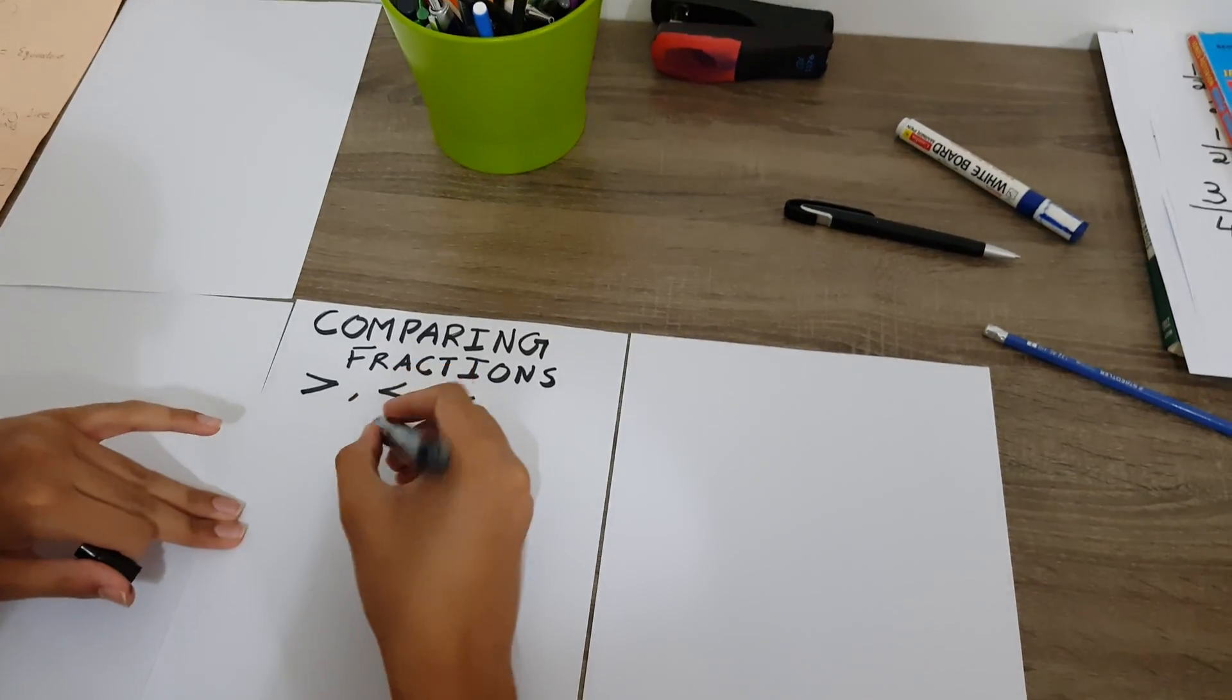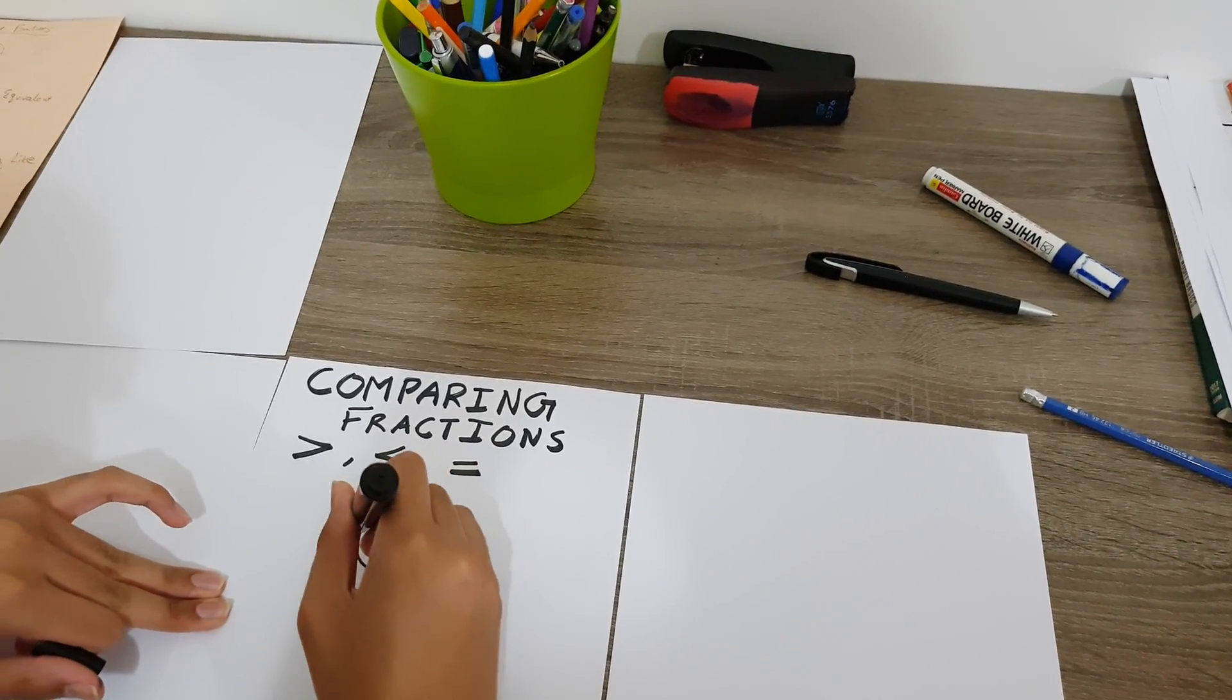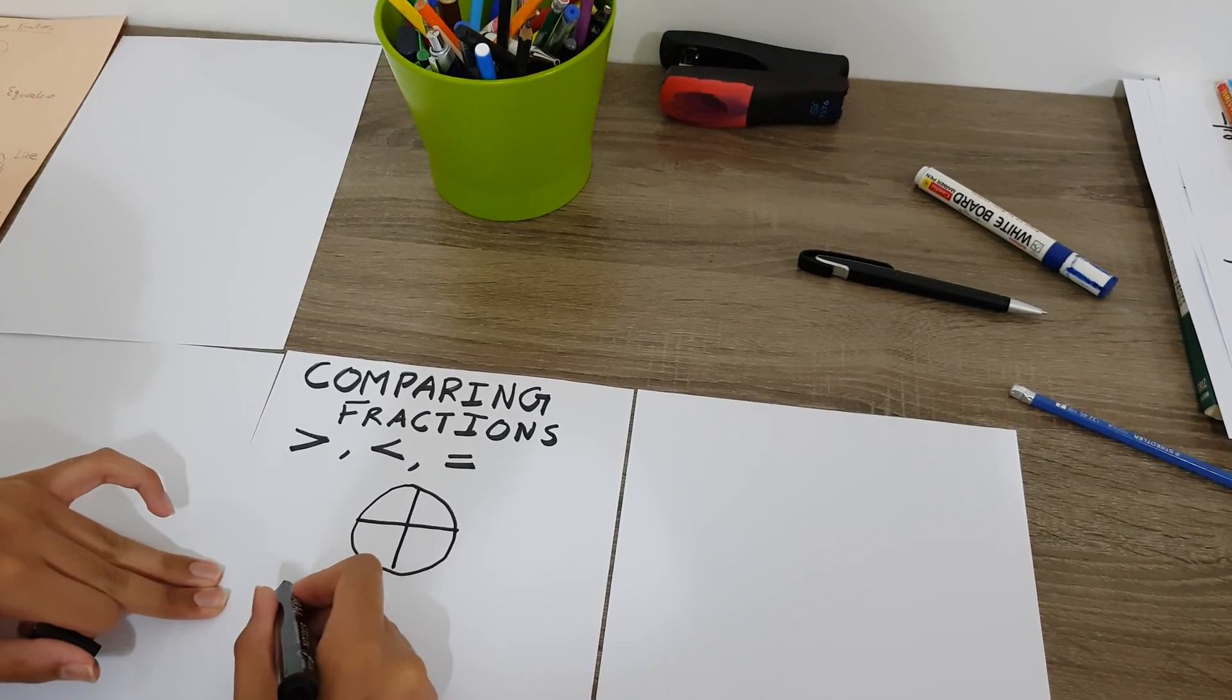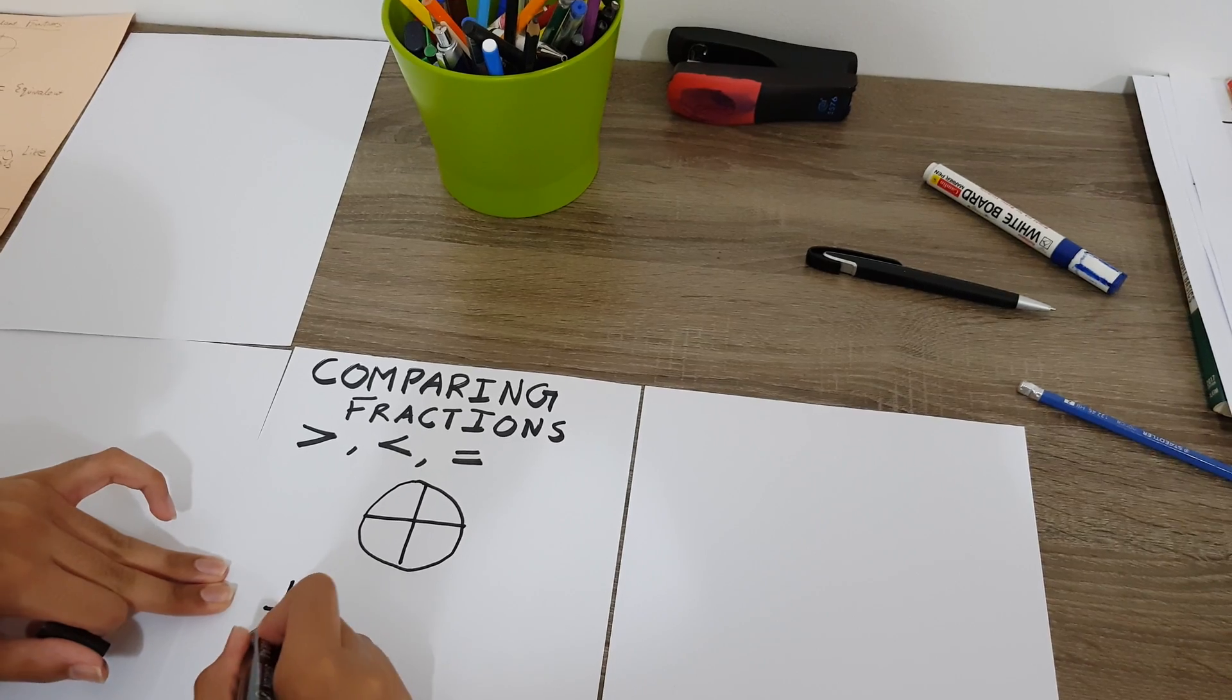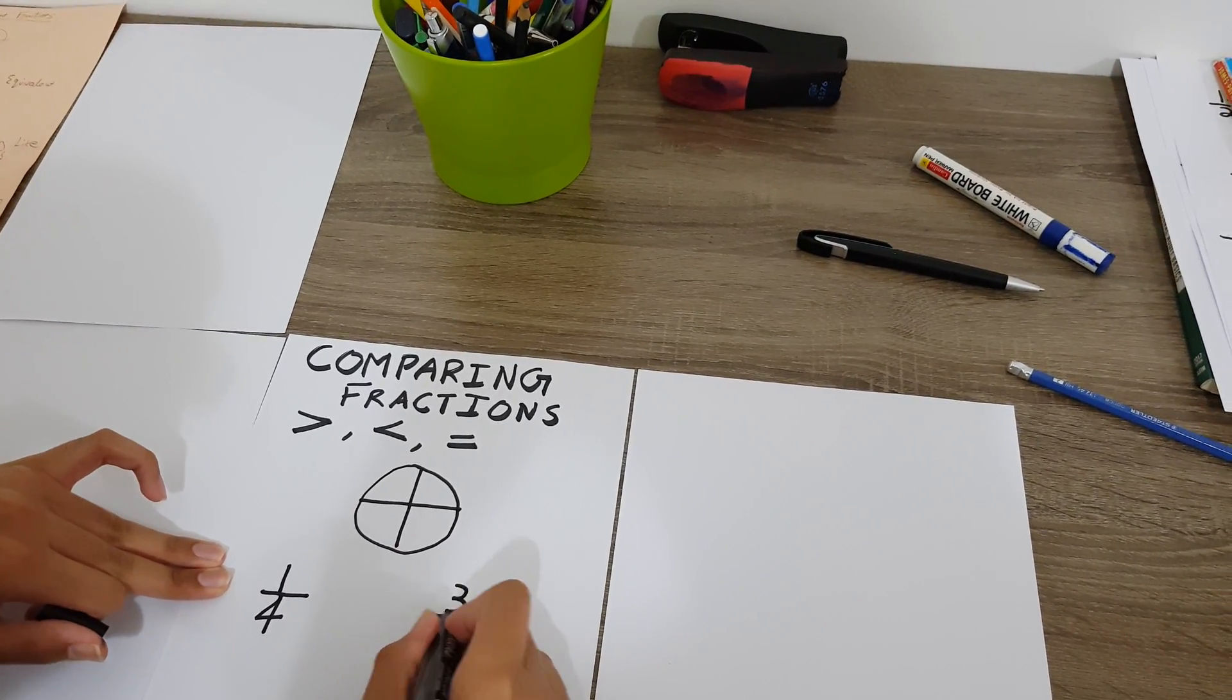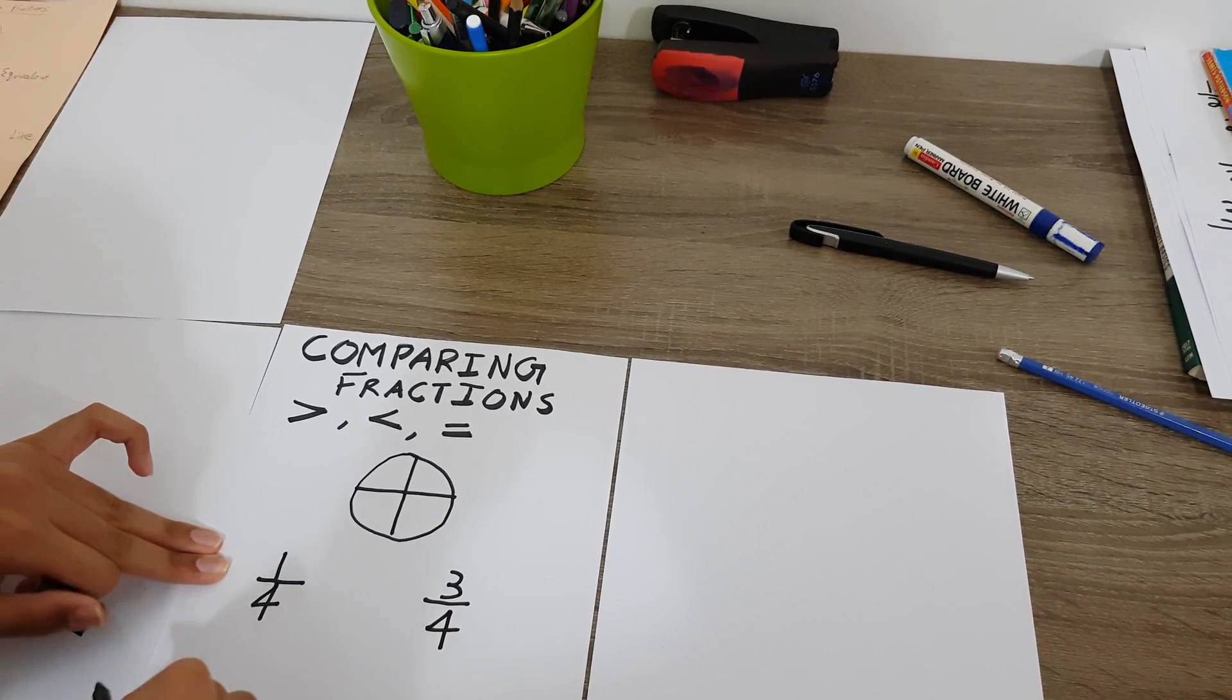Suppose you ordered a pizza and there were four slices. Your friend ate one of those four slices, and you ate three of those four slices. Who ate more? Which fraction is bigger?